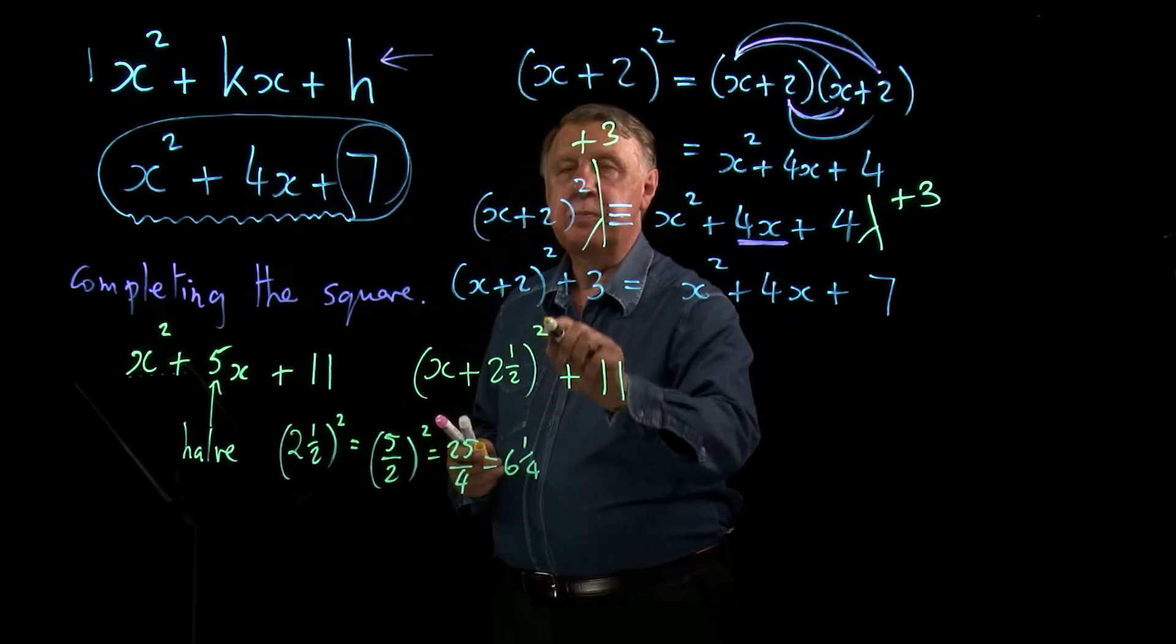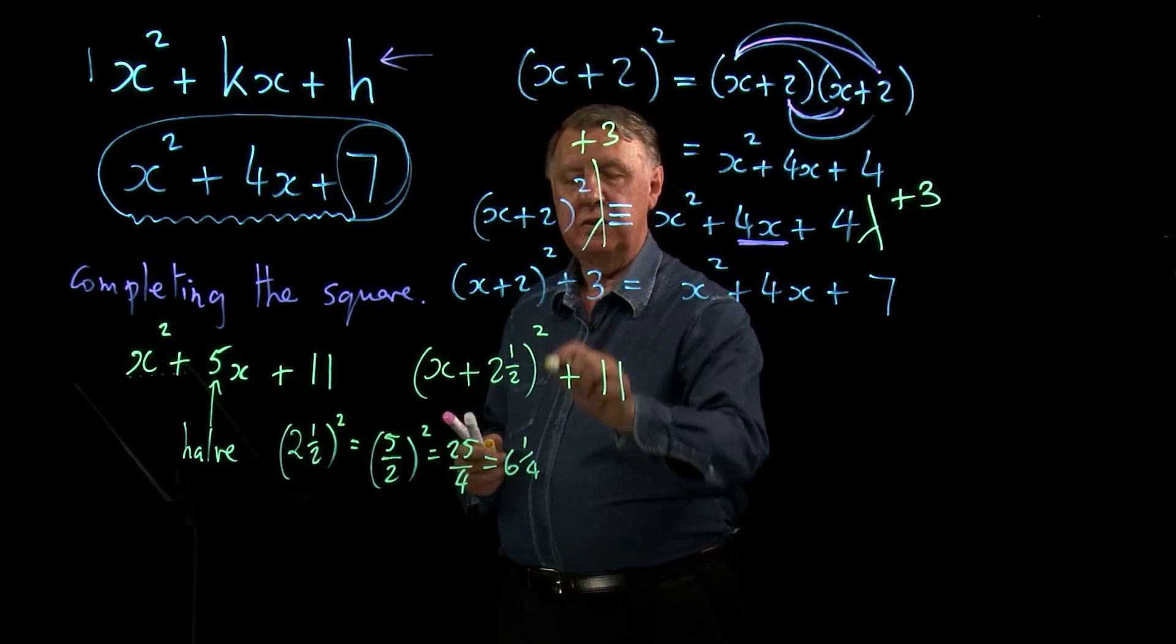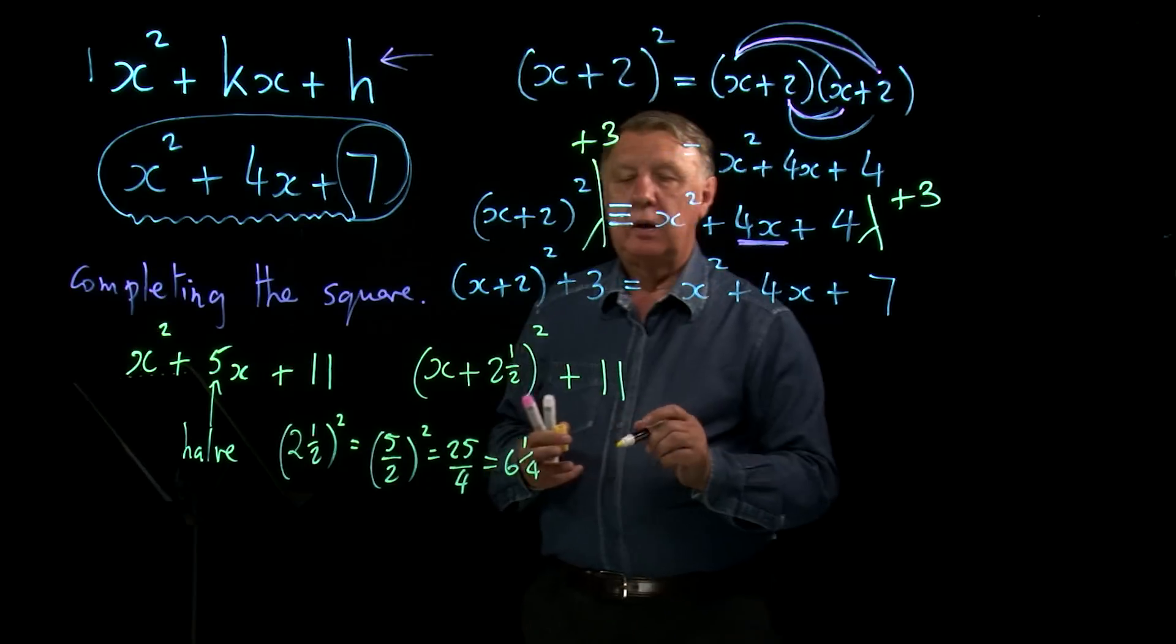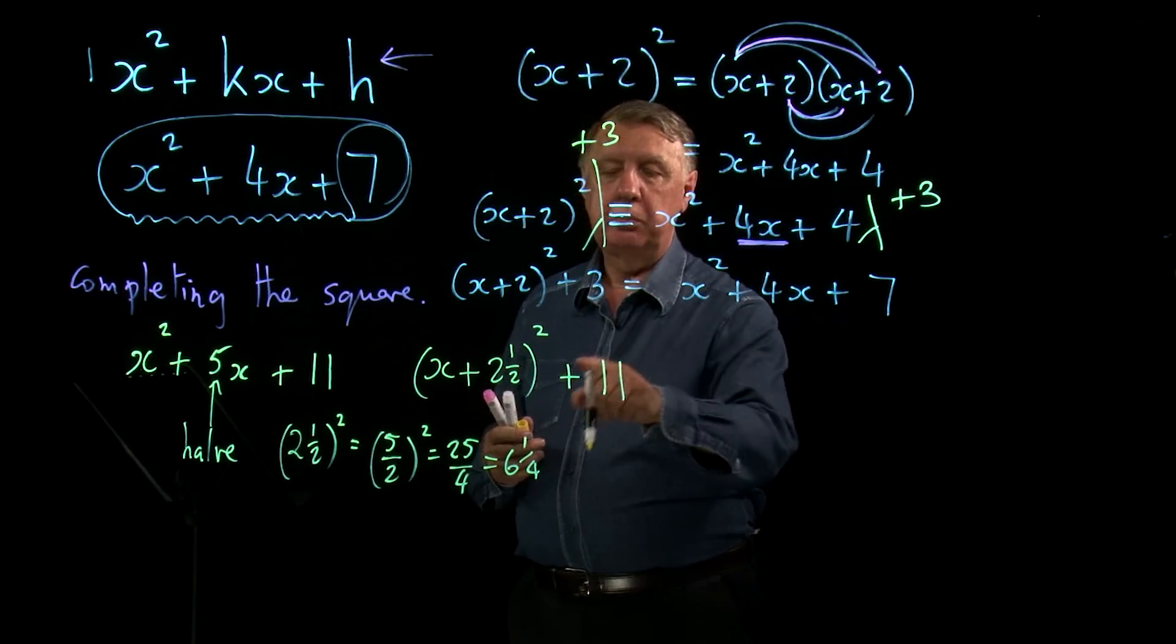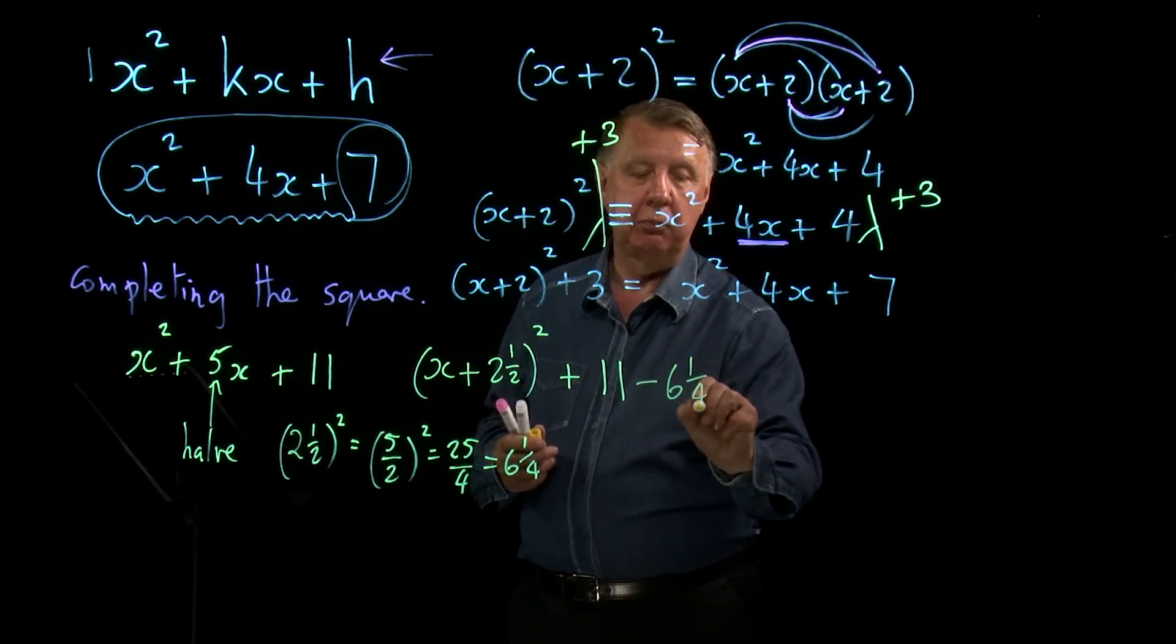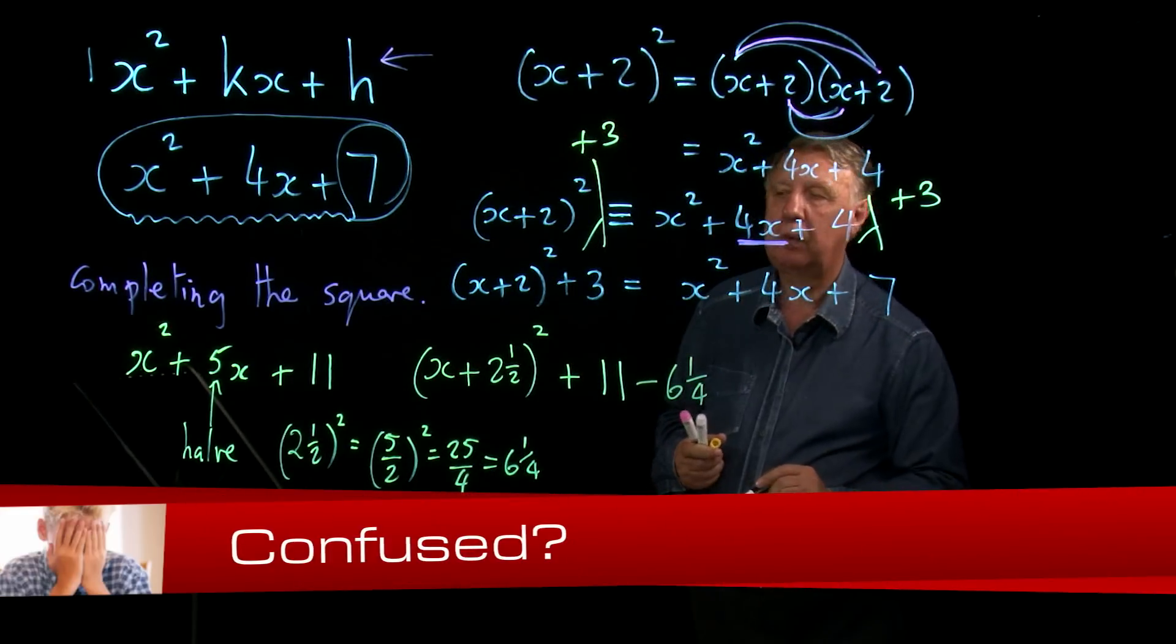This means then that when I do this bracket squaring, I'm going to get plus 6 and a quarter. Which I don't want, so I take it away again.